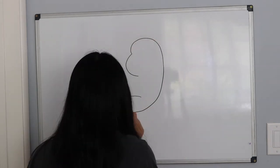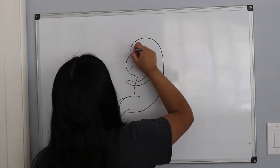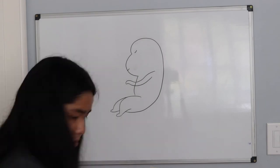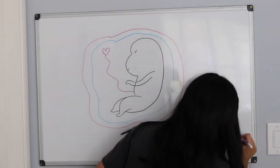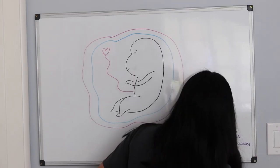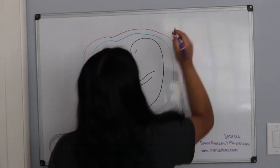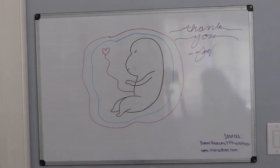Once gastrulation is completed, the embryo goes through organogenesis, in which the organs and organ systems are formed, concluding the process of embryonic development and initiating fetal development. So this concludes my video on embryonic development, and thank you so much for watching.